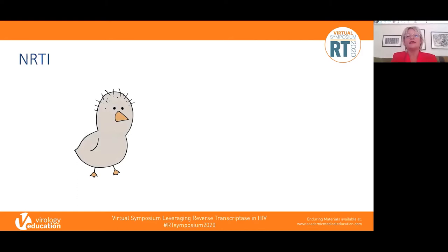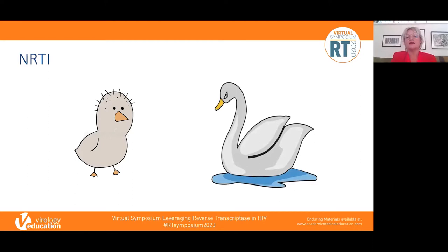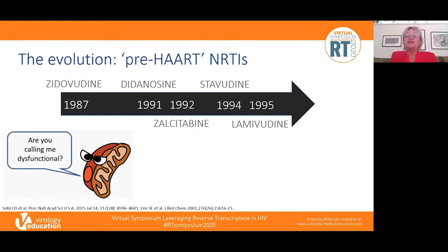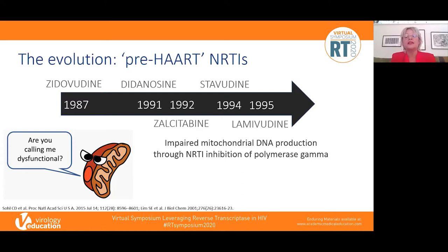I'll also touch on protease inhibitors and integrase inhibitors. Starting with NRTIs — this class exemplifies more than any other the evolution from ugly duckling to swan. The pre-HAART NRTIs developed before the mid-1990s evolved from zidovudine in 1987 through didanosine, zalcitabine, stavudine, and finally lamivudine in 1995. The key issue with this class was toxicity secondary to mitochondrial dysfunction, driven by impaired mitochondrial DNA production through inhibition of polymerase gamma.